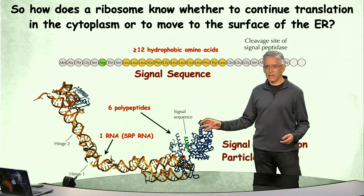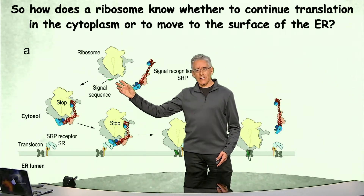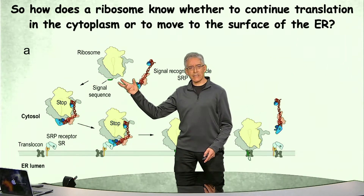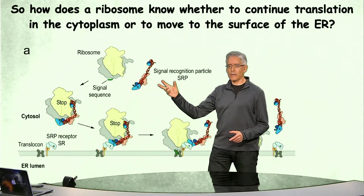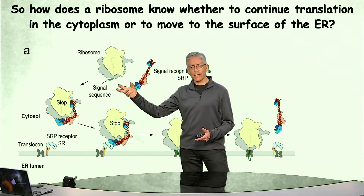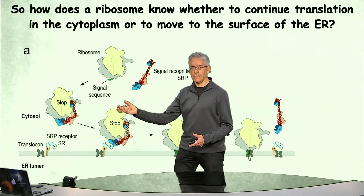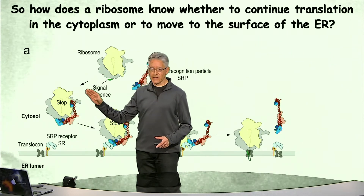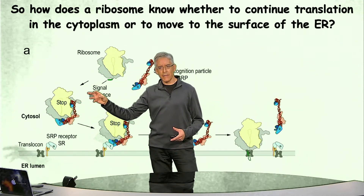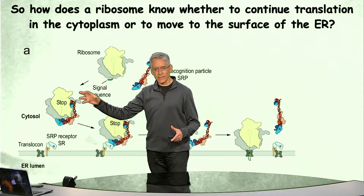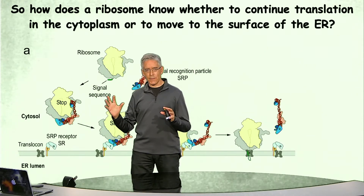The signal recognition particle recognizes the signal sequence the moment it becomes exposed in the cytosolic environment — that is, when it becomes accessible outside the surface of the ribosome. The SRP recognizes the hydrophobic nature of the signal sequence and interacts with it. The other end of the SRP then interacts with a site on the ribosome normally involved in engaging elongation factors, keeping those elongation factors away and producing an actual pause in protein synthesis.